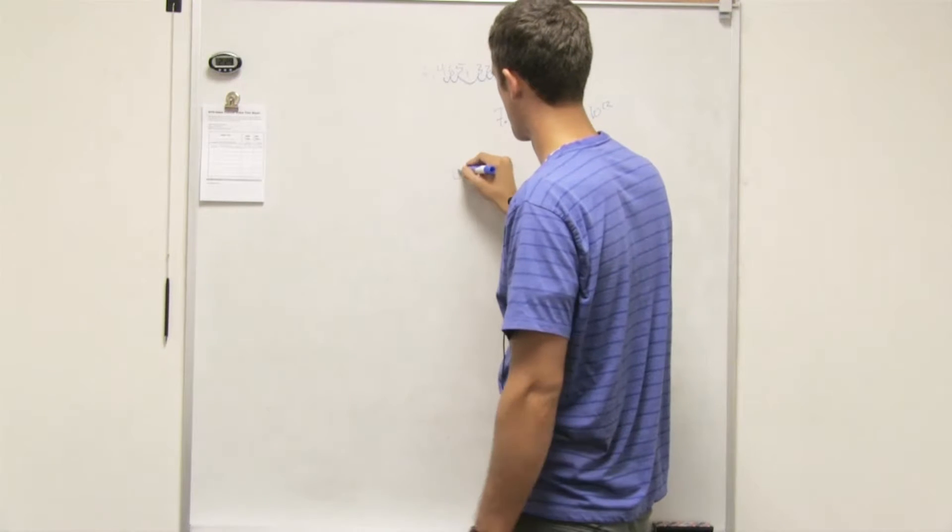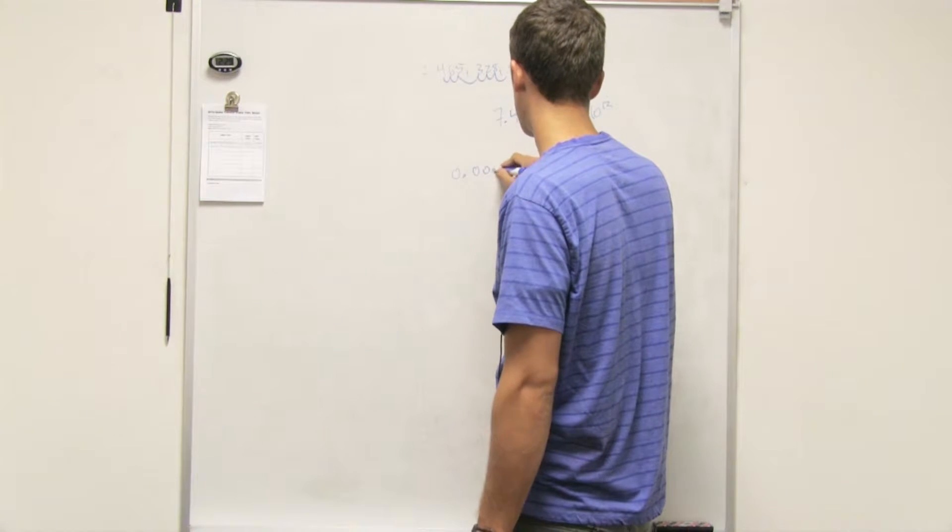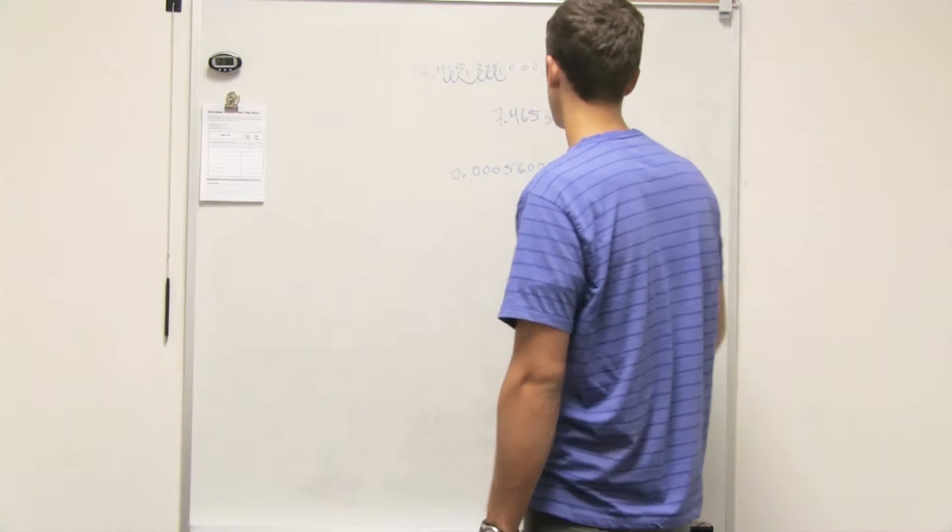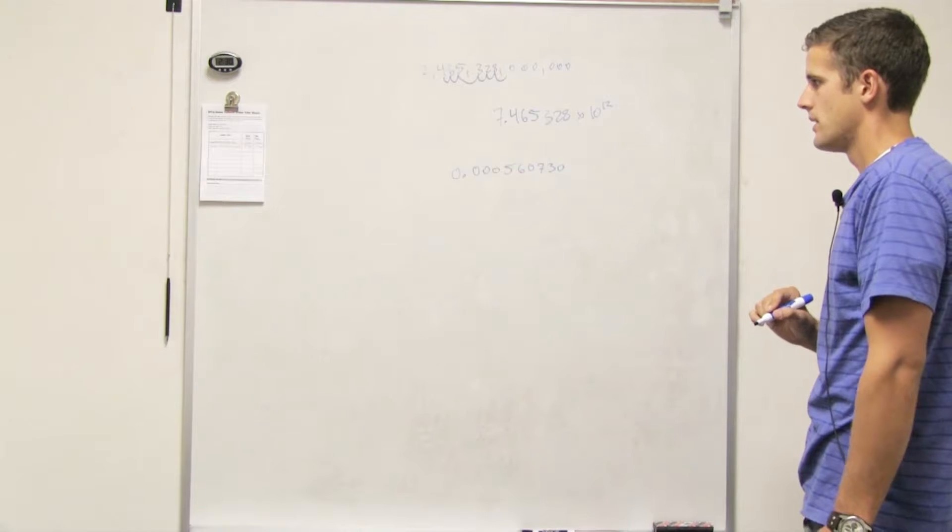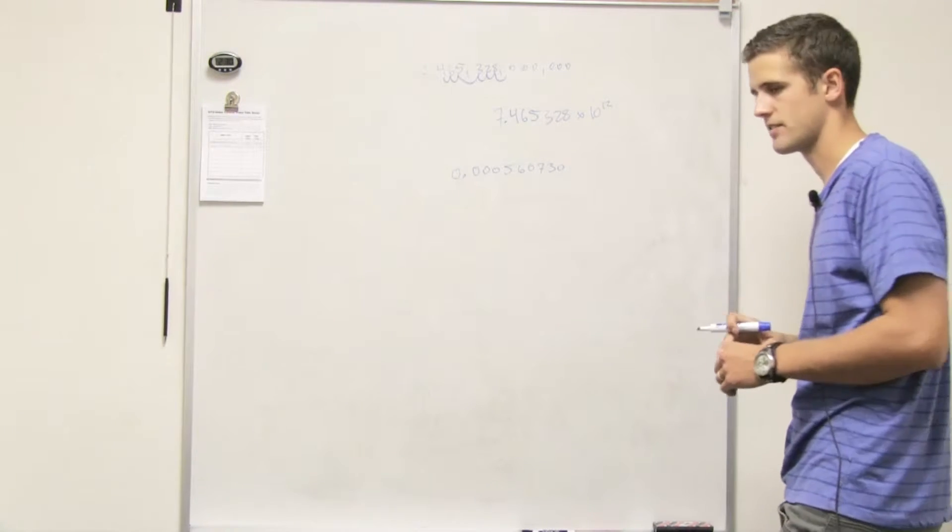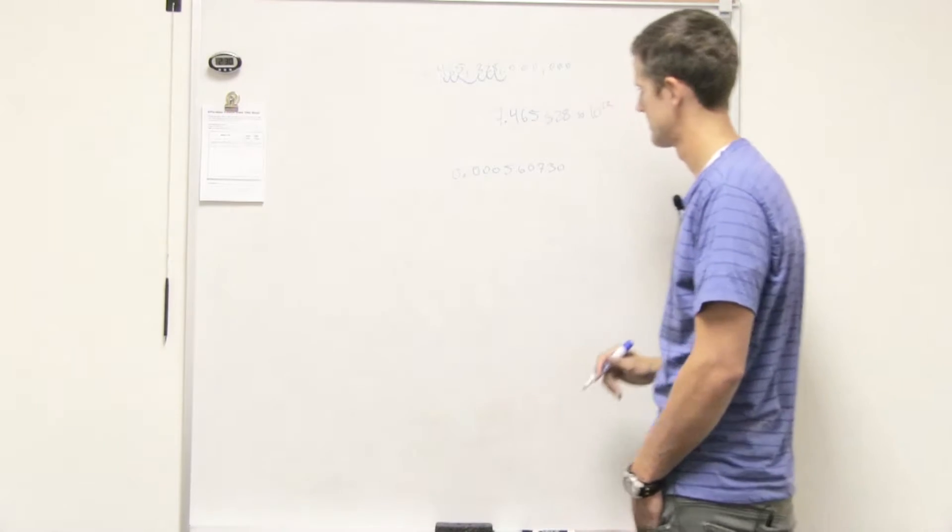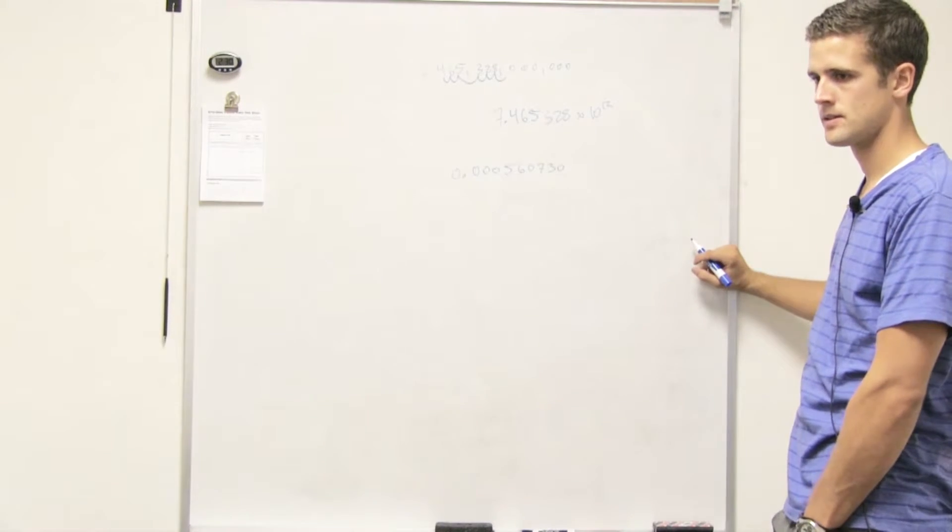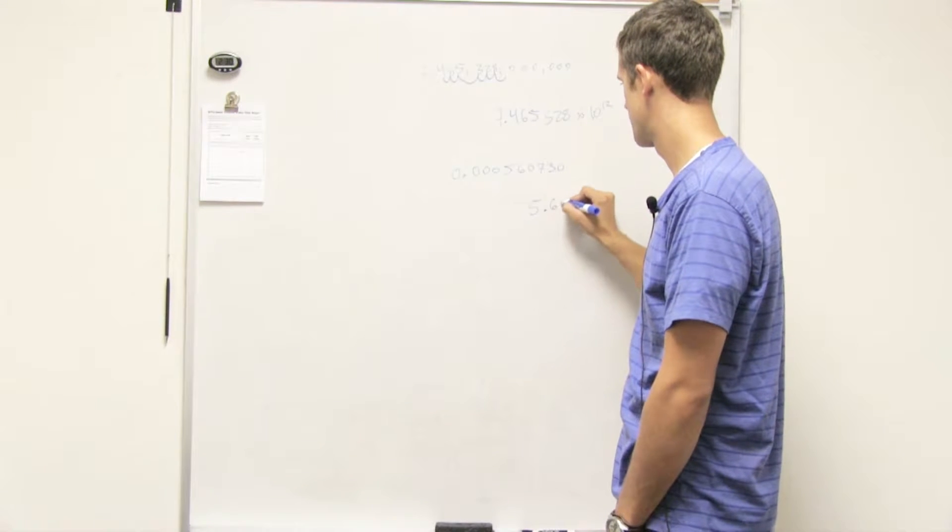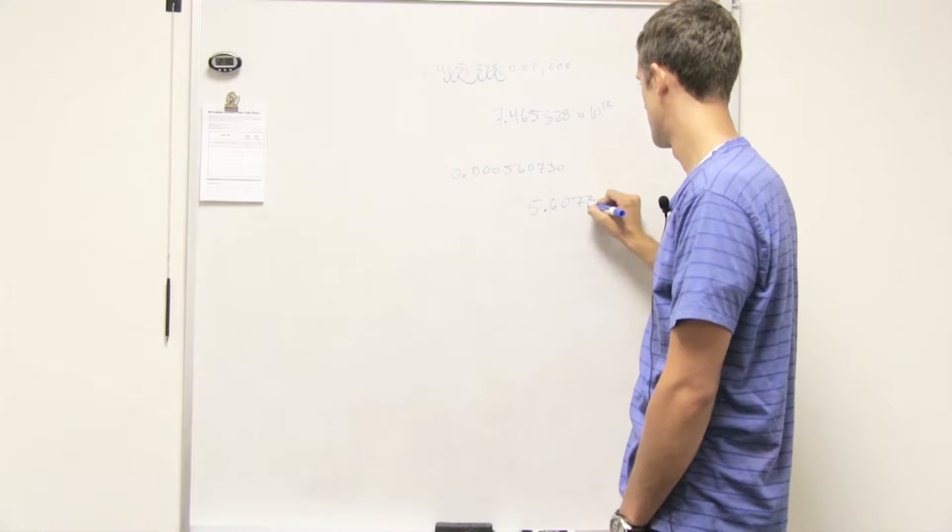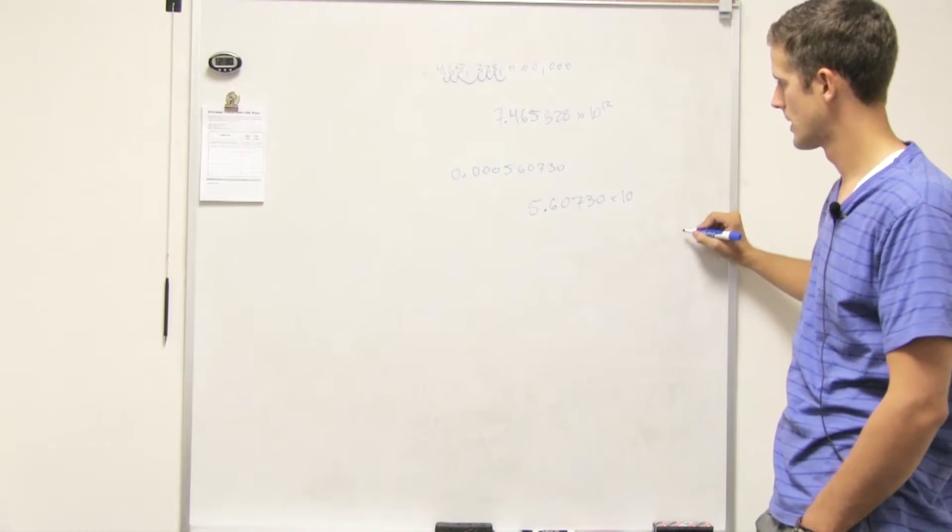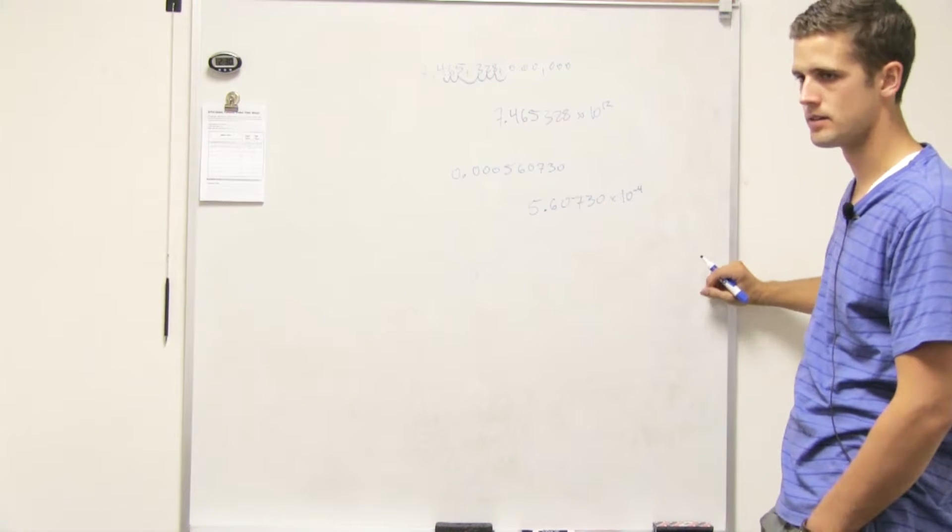And what about, say we have a number like this: 0.000560730. How would you write this in scientific notation with the correct number of significant digits? Let's see. 5.60730 to the negative 4th power? Yeah, exactly. Okay.